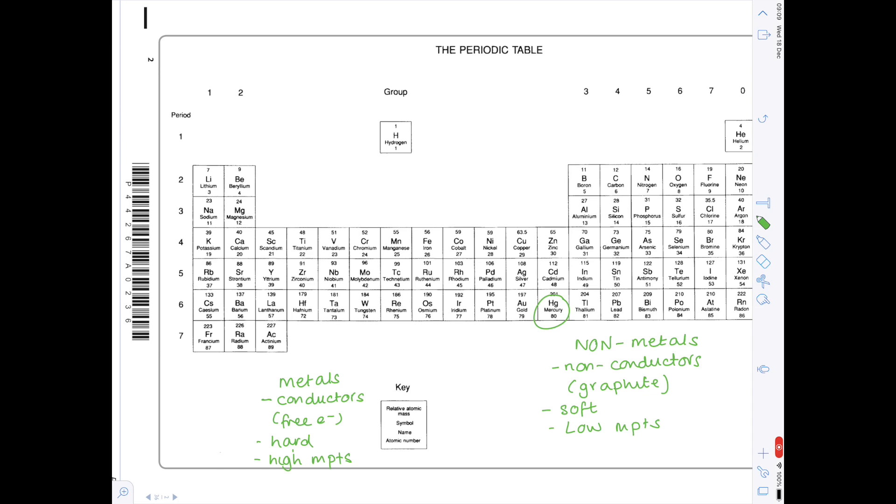Obviously there are exceptions to these rules. Something like mercury is a metal which is unusual in that it has a low melting point and then carbon in the form of graphite and diamond is extremely hard and has a very high melting point. So these rules don't apply to every single element but in general they hold true.